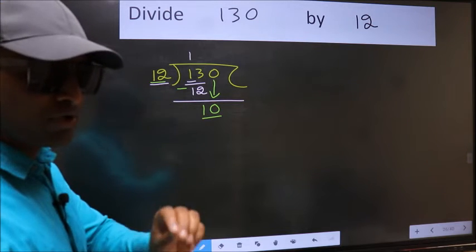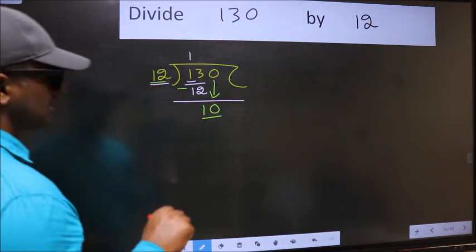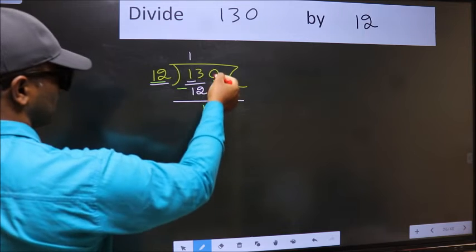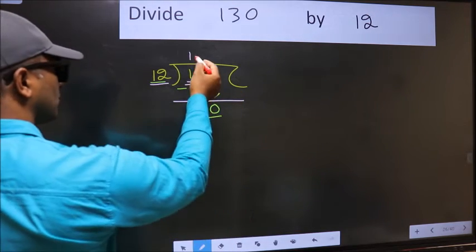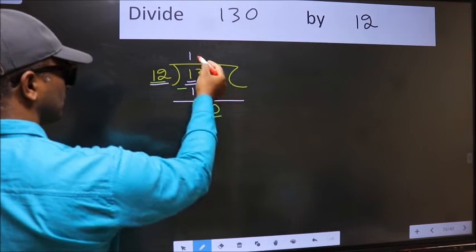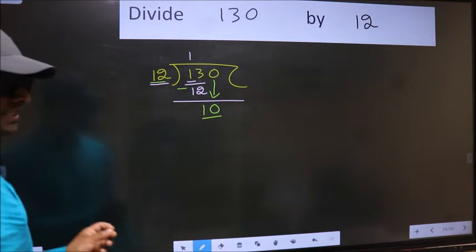Why is it wrong? Because just now you brought this number down, and in the same step you want to put dot and take 0, which is wrong.